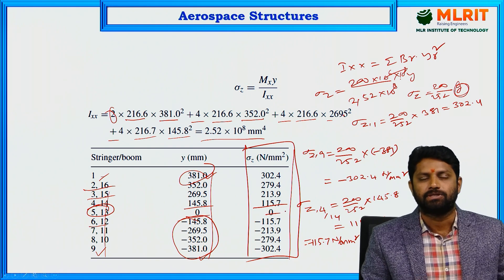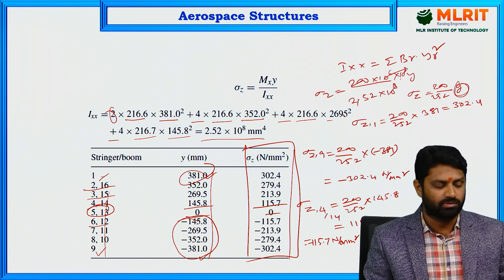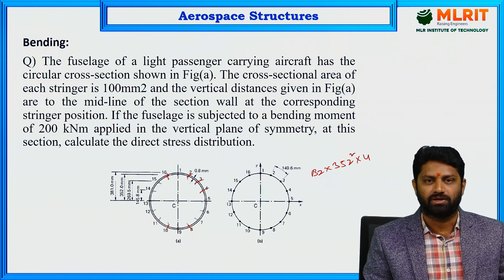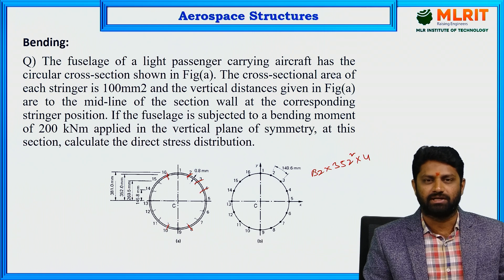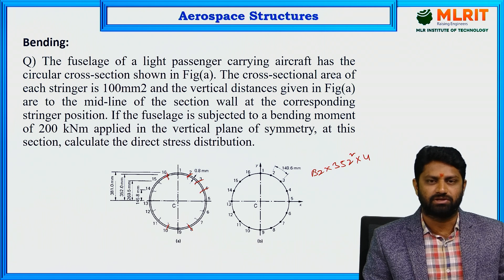This is how we calculate the direct stress distribution in the booms of a fuselage section subjected to bending. In the next session, we are going to look at fuselage sections subjected to shear loads and torsional loads. Thank you everyone for watching.